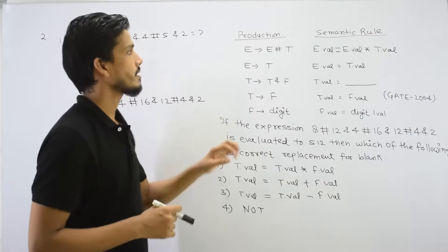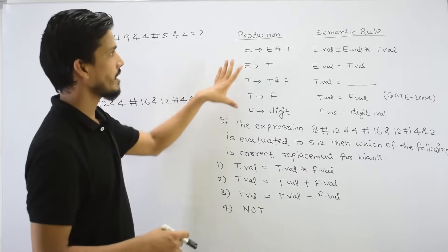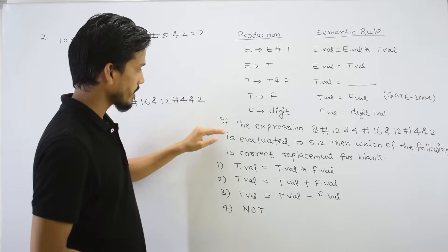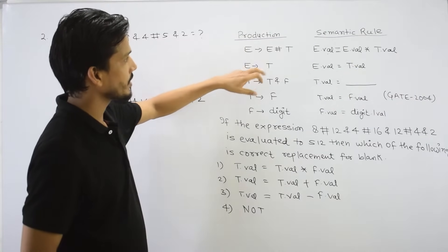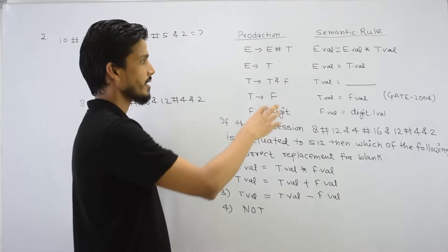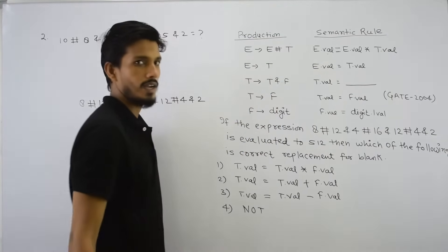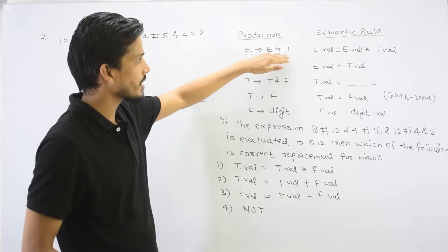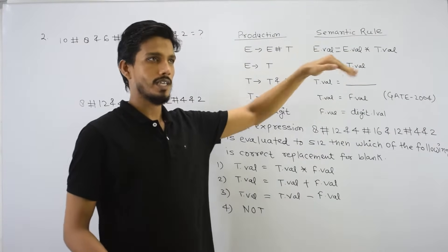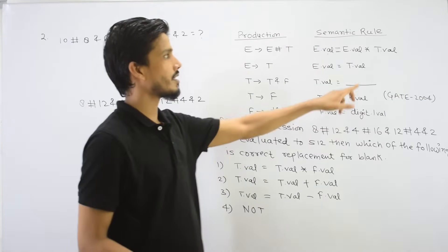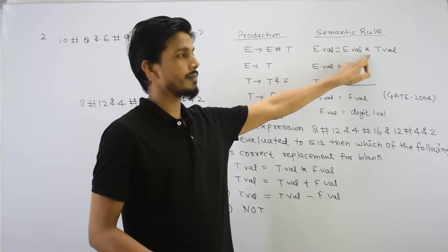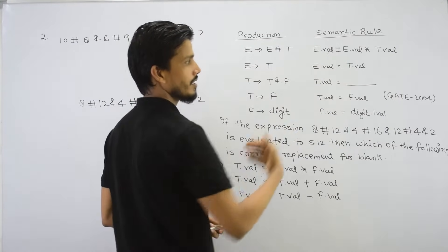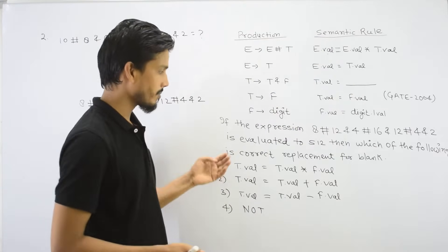Let's solve a question. This is your given production with a semantic rule. The operator decided here is hash. T derives T hash F, and T.val equals T.val multiplied by F.val — so there is a blank here that we have to identify. The semantic rule is the important rule here.